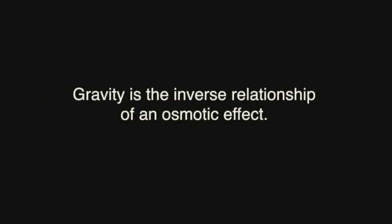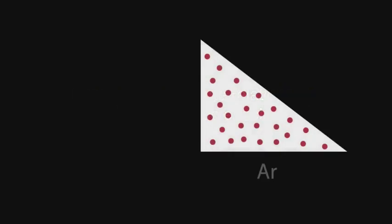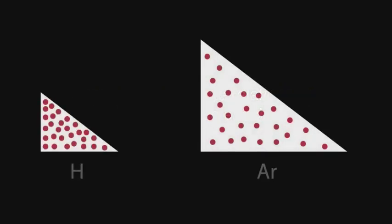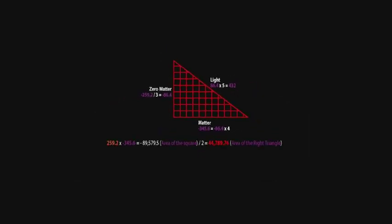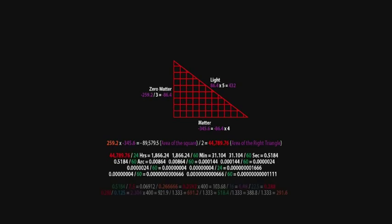Gravity is the inverse relationship of an osmotic effect, which is created by a lower charge density element, defined by alternating current, being attracted towards the higher charge density of a singularity zero point, representing direct current. The ATV illustrates the elemental charge density by representing the area that the fixed charge occupies.